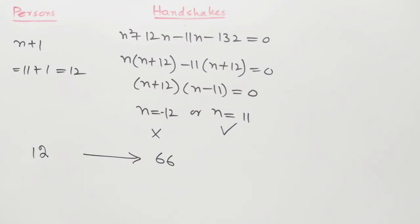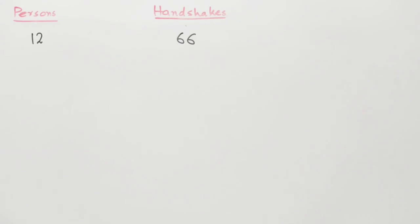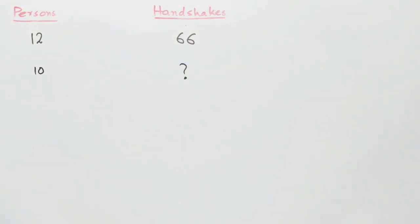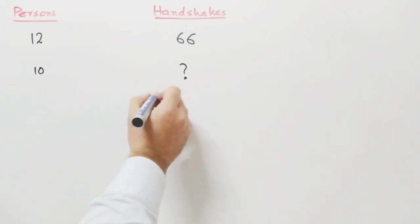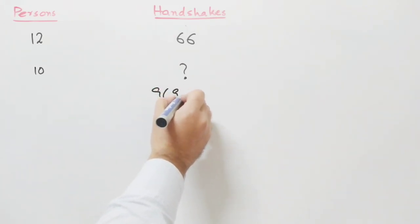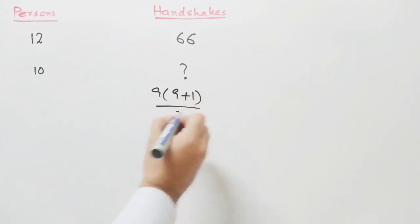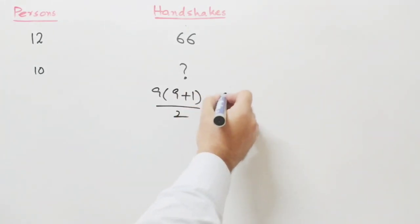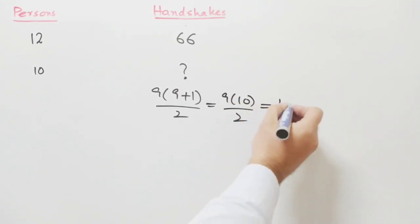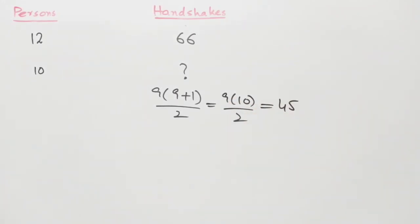Now we can solve any question like this. If we are given the number of persons, we can find the handshakes. For example, suppose we have ten persons. If we have ten persons, there will be how many handshakes? We put n equal to nine, because ten is n plus one. So nine times ten divided by two is equal to forty-five. If we have ten persons, there will be forty-five handshakes.